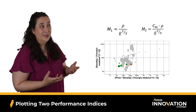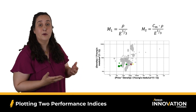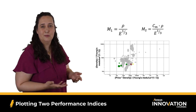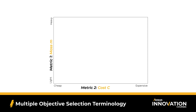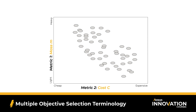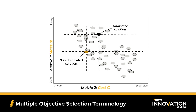Looking at this chart, there's no single material candidate that stands out for both objectives. Let's step back and review terminology for a generic chart in multiple objective optimization. A solution is a candidate that meets constraints but doesn't necessarily optimize the objectives. A dominated solution is not optimal — there are other candidates better on both metrics. A non-dominated solution is one where candidates may be better on one metric or the other, but not both. Finally, we have a trade-off curve: a non-mathematical sketch along where non-dominated solutions can be found.